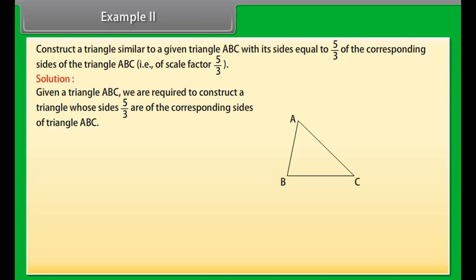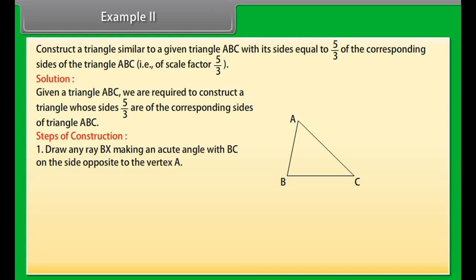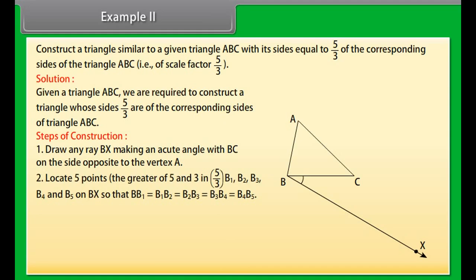Example 2. Construct a triangle similar to a given triangle ABC with its sides equal to 5 by 3 of the corresponding sides of the triangle ABC, i.e., of scale factor 5 by 3. Solution: Given a triangle ABC, we are required to construct a triangle whose sides 5 by 3 are of the corresponding sides of triangle ABC.